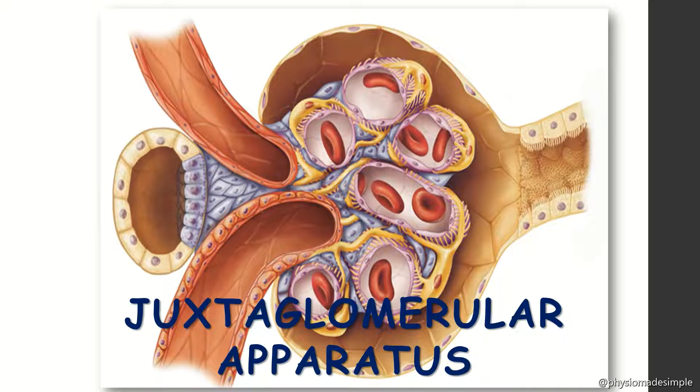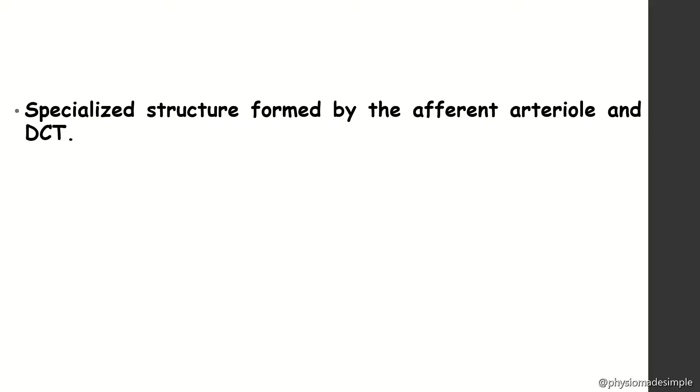This is the juxtaglomerular apparatus seen inside the nephrons. It is a specialized structure formed by the efferent arteriole and the distal convoluted tubule (DCT). Above is the efferent arteriole and glomerulus blood vessel, Bowman's capsule, and the PCT which is highly convoluted. The DCT last portion contacts the efferent arteriole, and that contacting area is the juxtaglomerular apparatus.